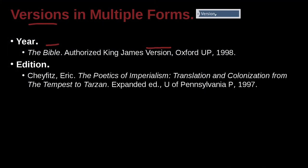What about different editions? Because books have different editions, and those editions can be different — not always radically different, but somewhat different. Here is the author's name: Jevet, Eric — last name first, first name last. The Poetics of Imperialism: Translation and Colonization from the Tempest to Tarzan. That's the book name, and we know it's a book name because it's italicized. After the period, we're going to explain what version this is — the Expanded Edition.